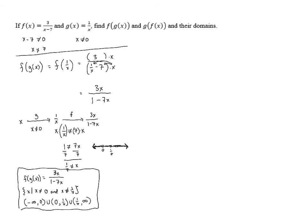Let's take a look at the other composition of functions: g of f of x. On the inside we need f of x, so this is going to be g of 3 over x minus 7. Then we evaluate g at 3 over x minus 7. Looking at g of x, wherever we have an x we replace it with 3 over x minus 7, giving us 1 over 3 over x minus 7.